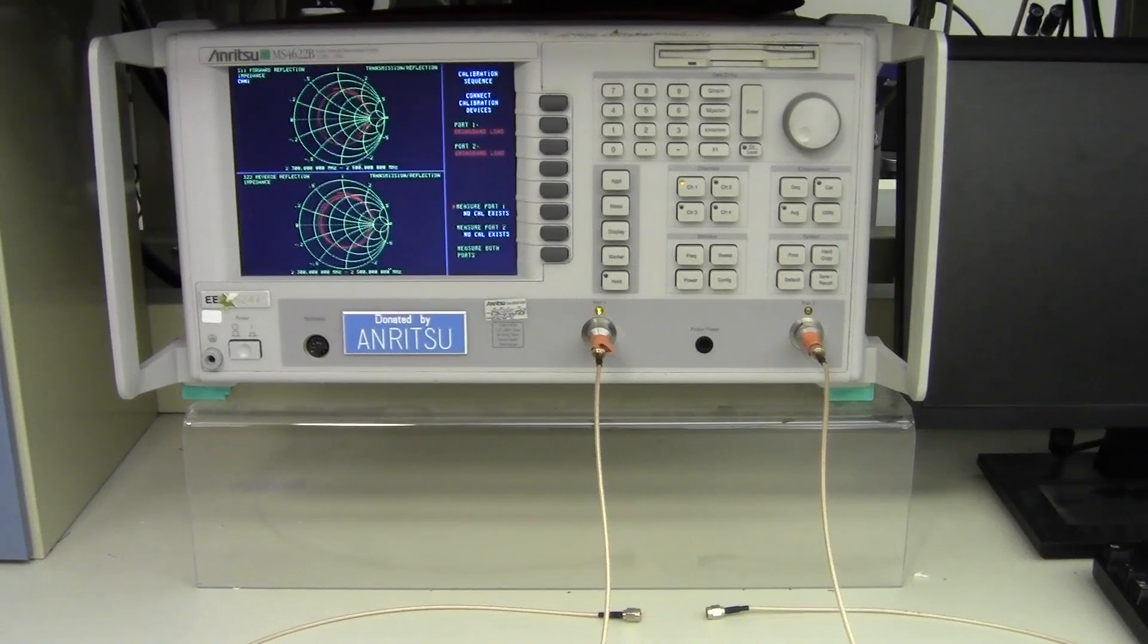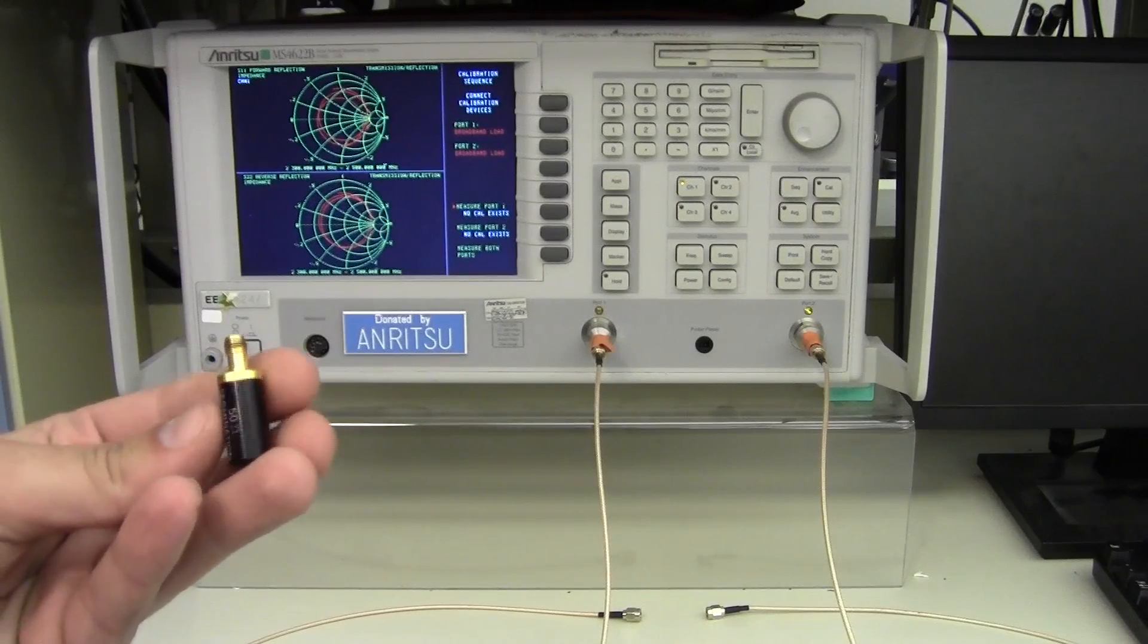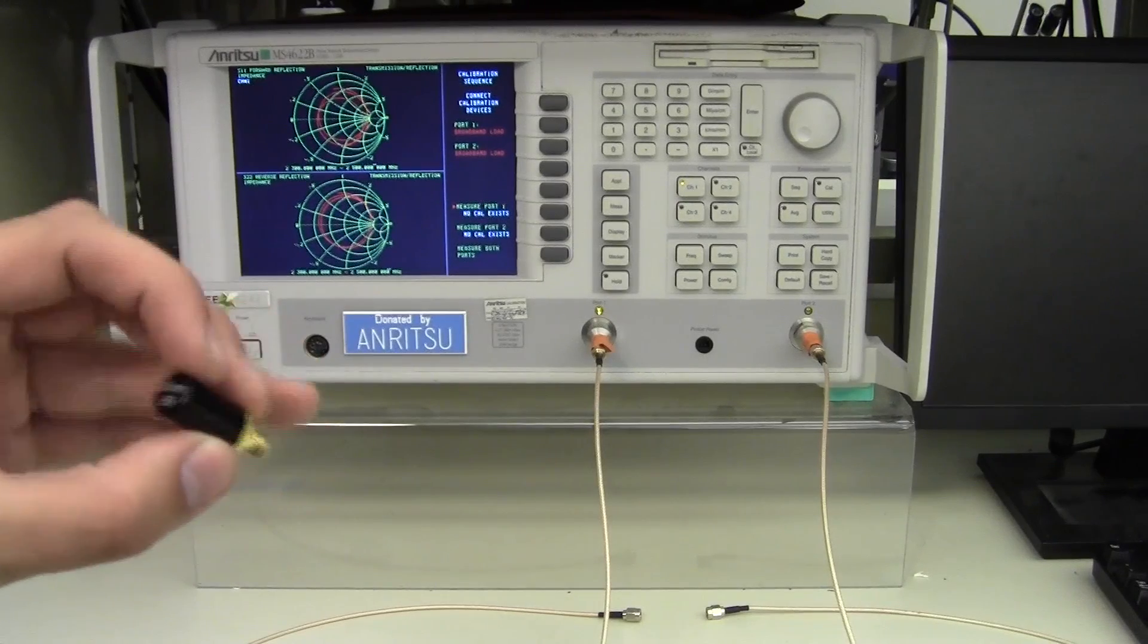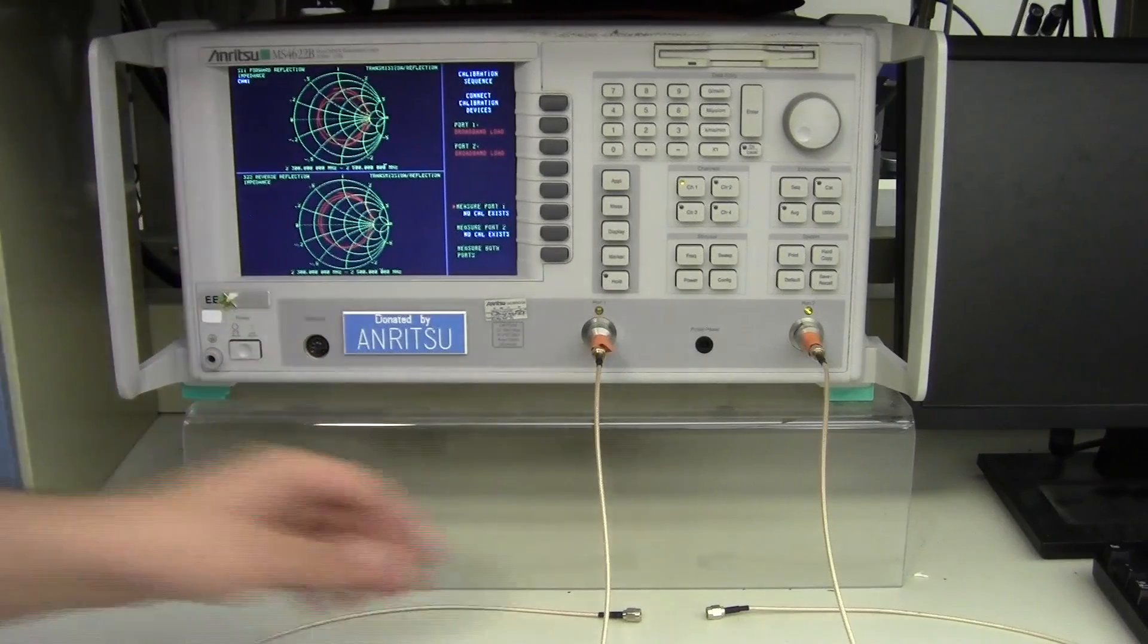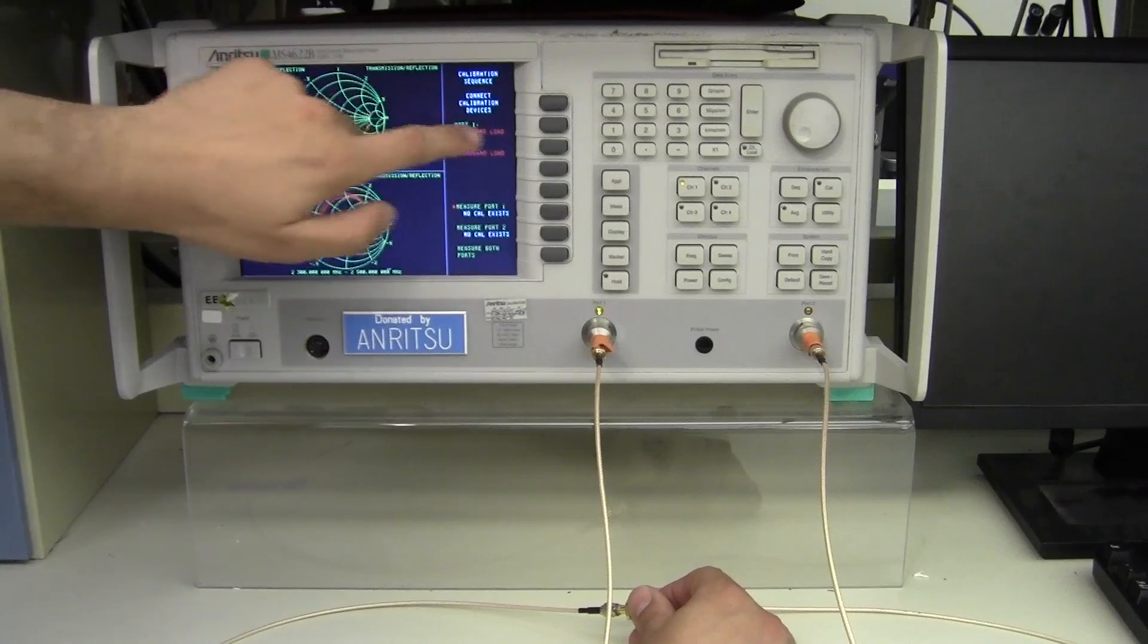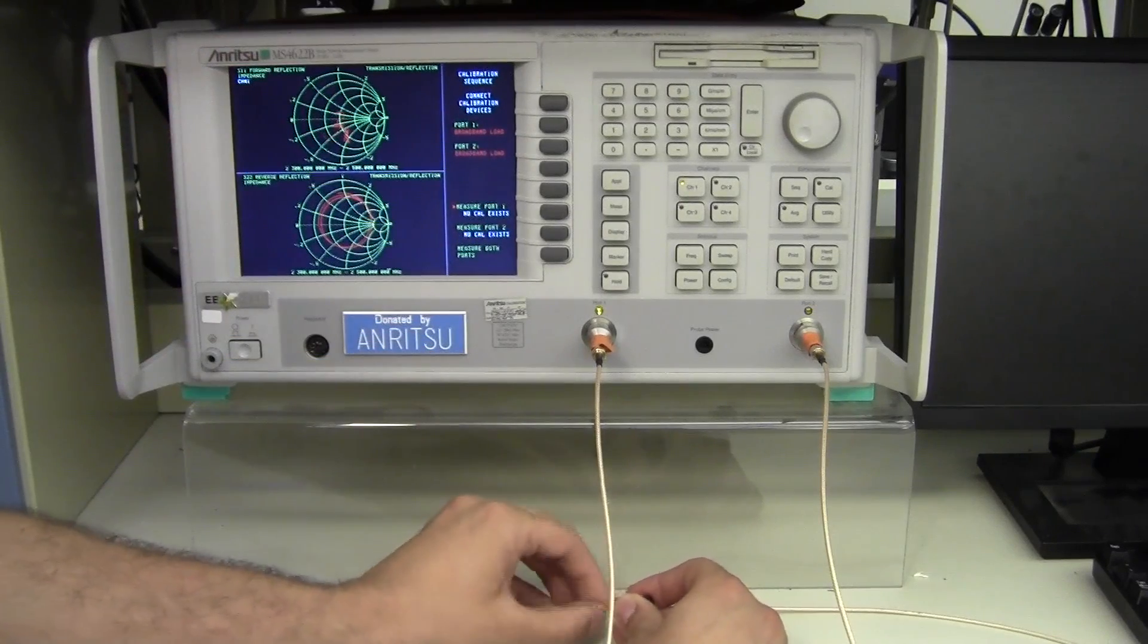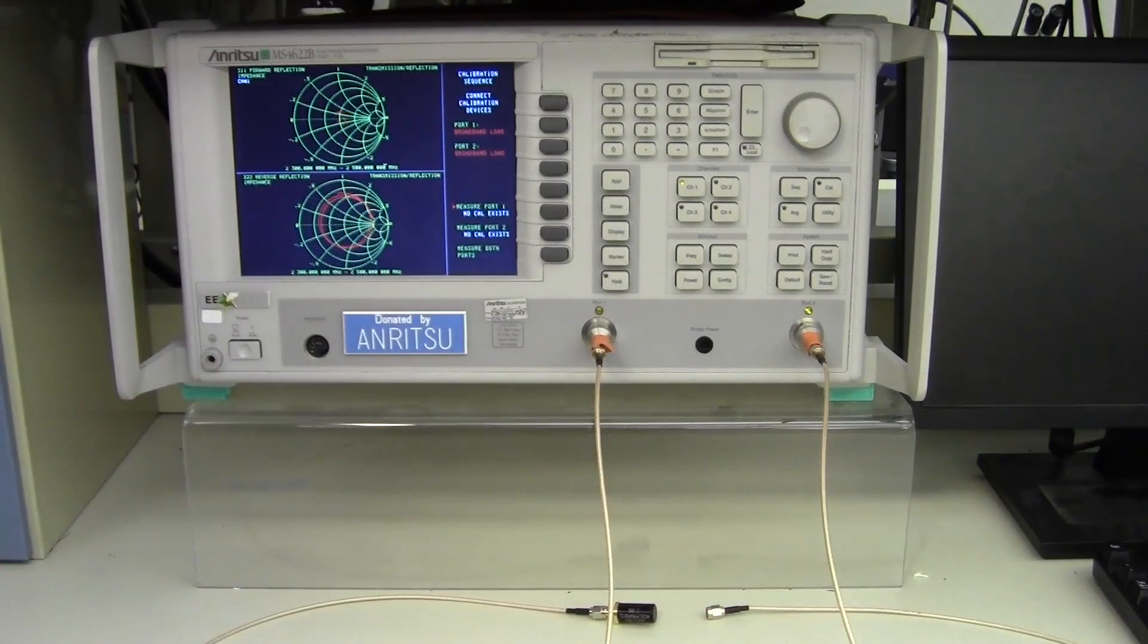We now can start the calibration. The first step is calibrating the two ports with a broadband load. This is a 50 ohm broadband load, which is possibly the most expensive 50 ohm resistor you ever use in college. On the top right here it asks port 1 broadband load, port 2 broadband load, and so I will install on each of the two ports a 50 ohm broadband load.